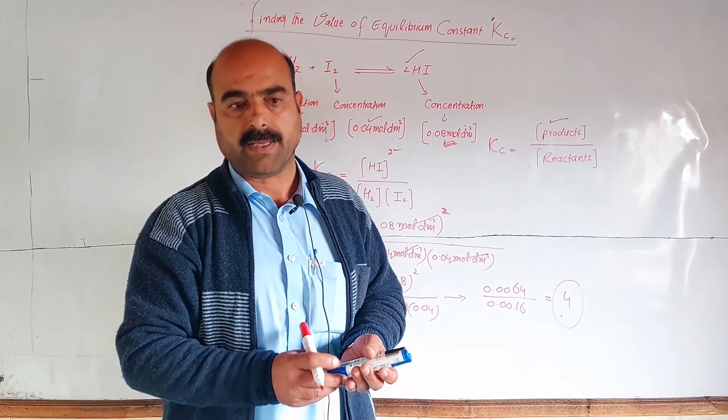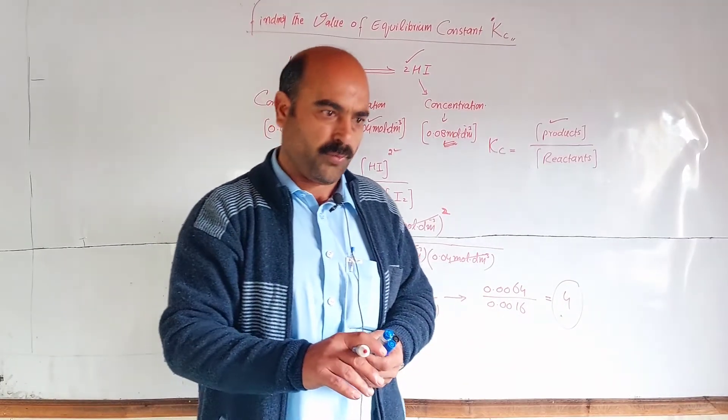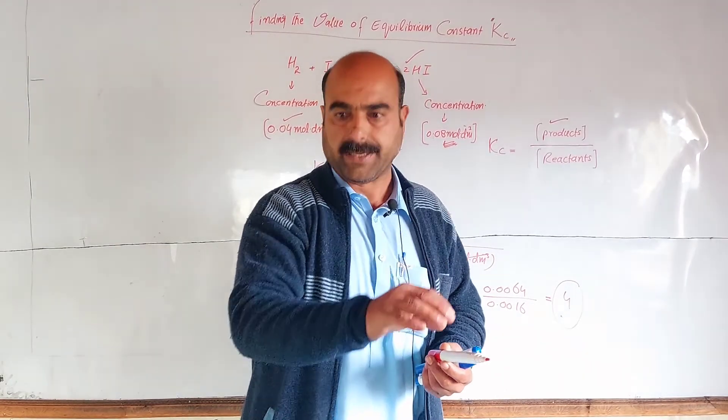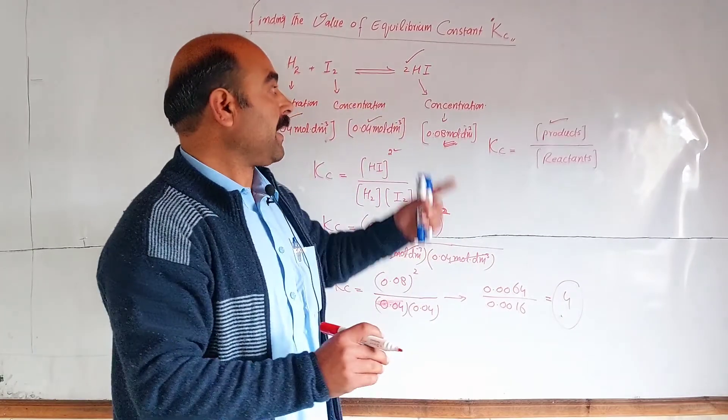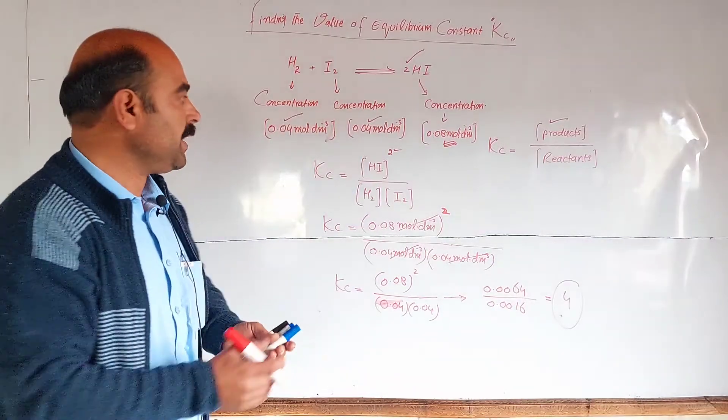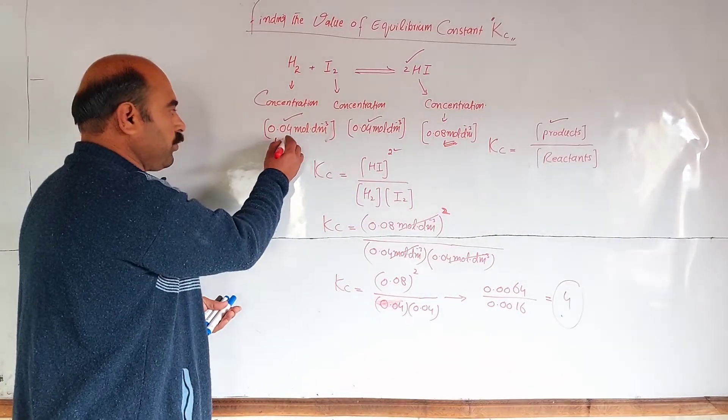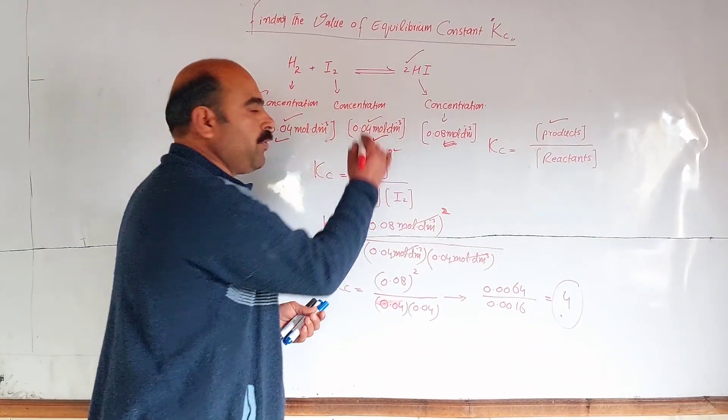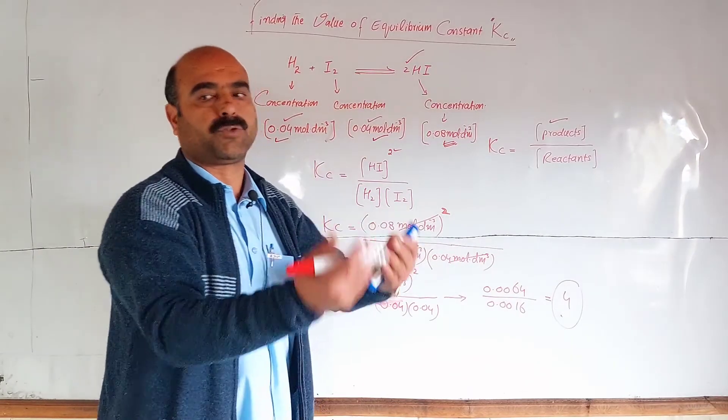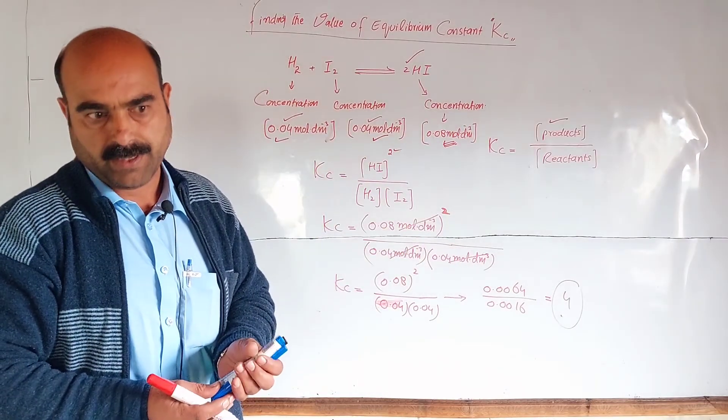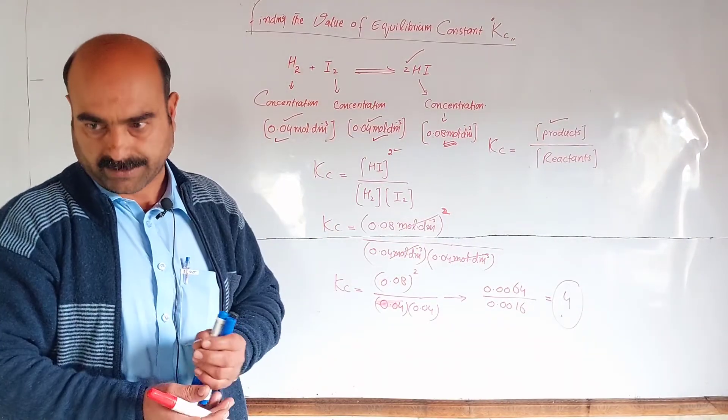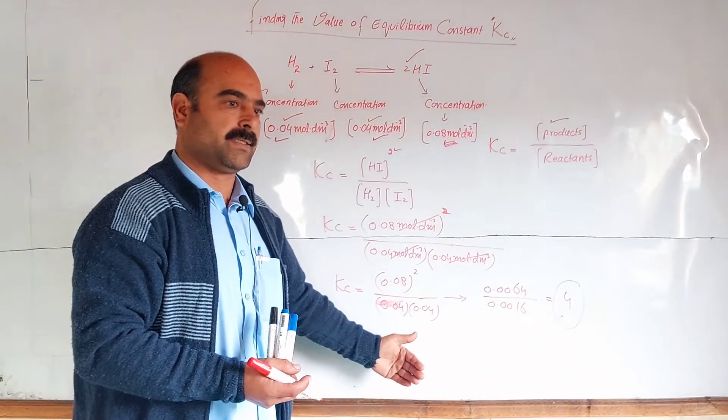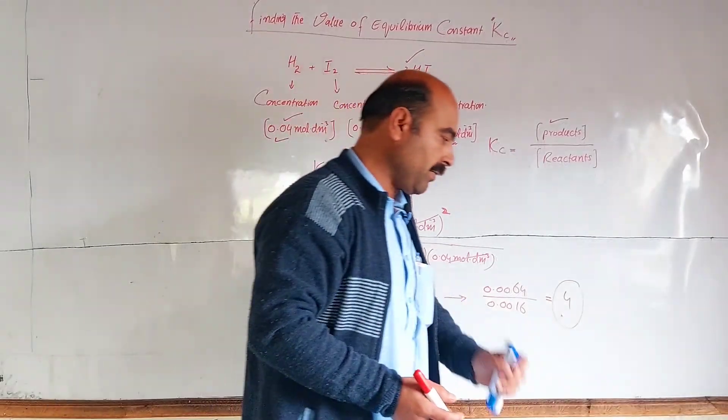If a compound or mixture is present, we take a sample from that mixture and analyze it. We determine how many moles per decimeter cubed of hydrogen, iodine, and hydrogen iodide are present. We analyze the mixture to find out each reactant and each product concentration.